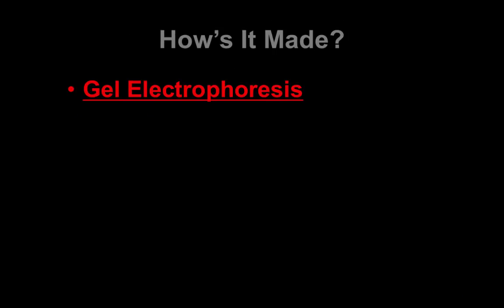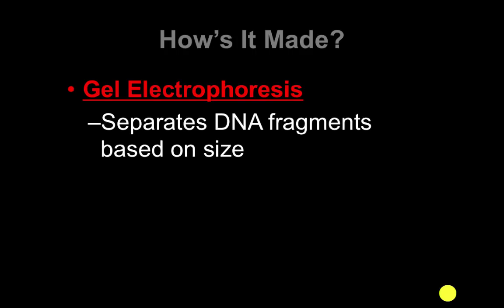We're going to make a DNA fingerprint with a process called gel electrophoresis. That's a big word to basically say we're going to use electricity to separate DNA fragments based on size. So the DNA will go through a gel using electricity, and the fragments will separate out based on their size. Let's look at the steps of gel electrophoresis.